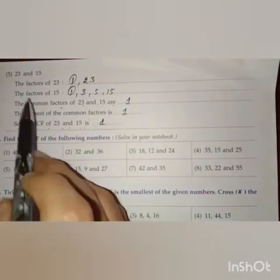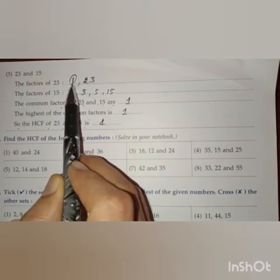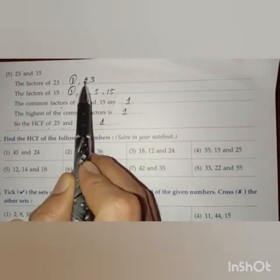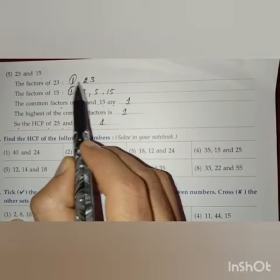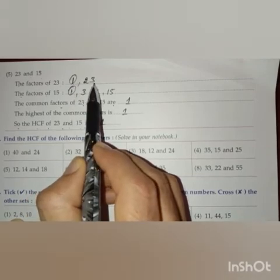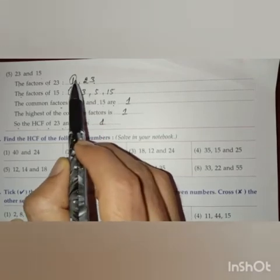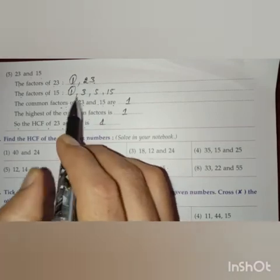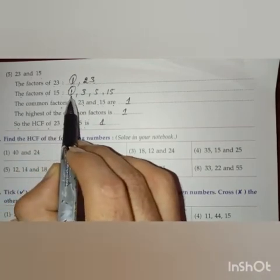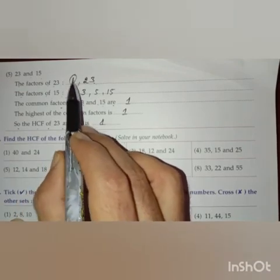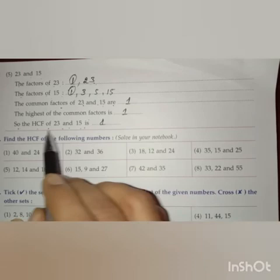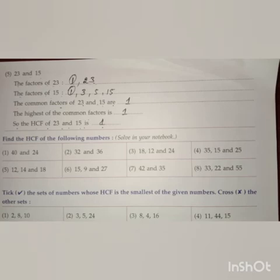Got it, children? The factors of 23 are 1 and 23 only, so 23 is not divisible by any other number except these two — it is a prime number. The factors of 15 are 1, 3, 5, and 15. The only common factor is 1, so the highest common factor is 1. Next session we will discuss questions 2, 3, 4, and 5. Thank you.